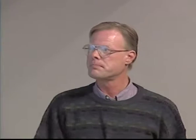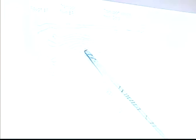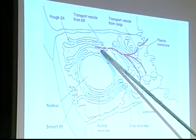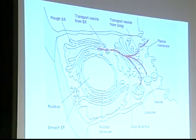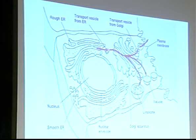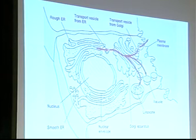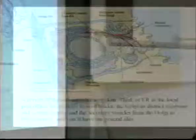To summarize the endomembrane system: think of the ER as the local post office, receiving proteins indiscriminately. The Golgi is the regional sorting and distribution center. Secretory vesicles are the mail carriers delivering material to where it's supposed to go. That's a good analogy for remembering what each component does. This is a good stopping point — next time we'll get into the energy production organelles.